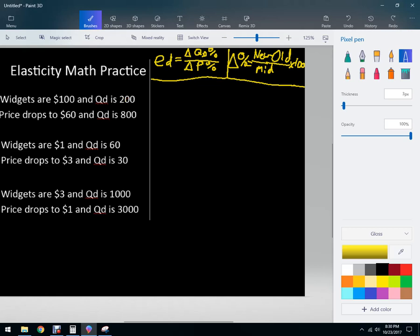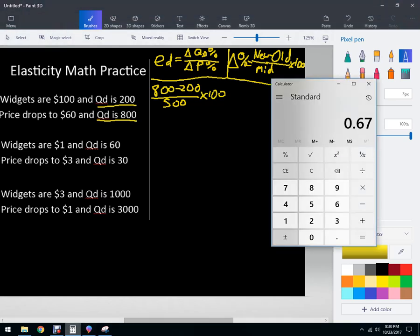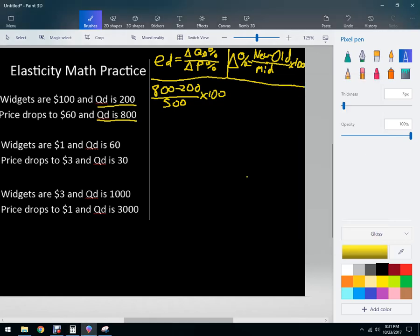We're going from quantity demanded of 200 to quantity demanded of 800. And so the new quantity, I like to do quantity first because it's the number on the top. So I've got this and then what's halfway in between that. So you can add them together, that gives me 1,000, and then half of that is 500. All of this times 100. And so I've got 600 over 500 times 100, really just 6 over 5, which is 1.2. So this is a percent change of 120%.